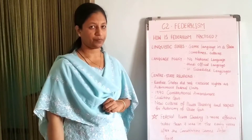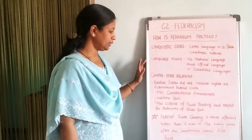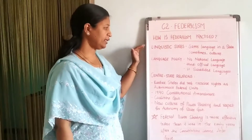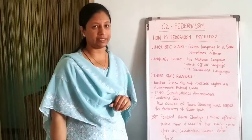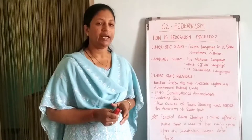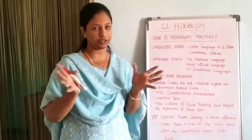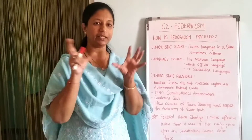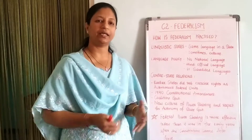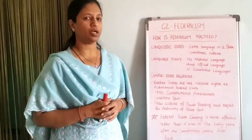There are three main points: first is linguistic states, second is language policy, and third is centre-state relations. Regarding linguistic states — when the British were here, our country was divided into four provinces: North, South, East, and West. They controlled the country that way and did not put us into a state system. They were not bothered about our culture, languages, or religions.